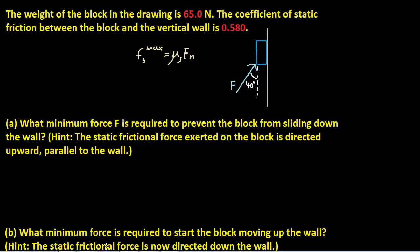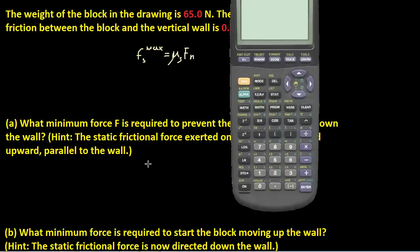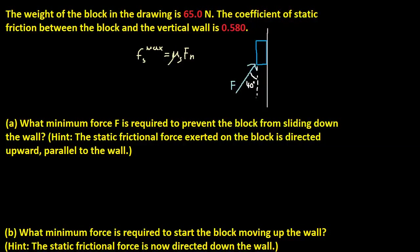Hello, we have this frequently asked problem. In this problem we have a little block that is pushed up against the wall, and you're trying to push it up. Let's just read the question. The weight of the block in the drawing is 65 newtons. The coefficient of static friction between the block and the vertical wall is 0.580.